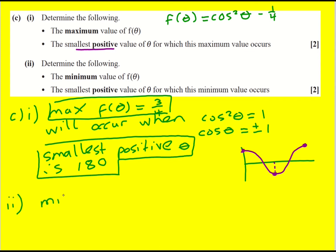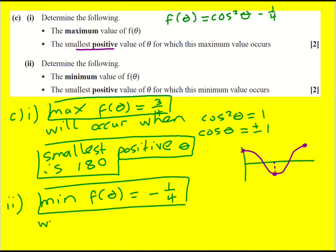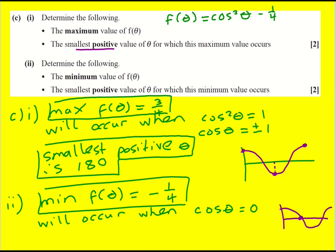For the minimum: be careful here, because although cos can equal minus one, cos squared would then be one. So the minimum value of cos²(θ) is actually zero. Therefore the minimum value of the function is minus a quarter. This occurs when cos²(θ) is zero, so when cos(θ) equals zero. You can use inverse cos or look at the graph — cos hits zero at 90 and 270 and so on, so the smallest positive θ is 90 degrees.